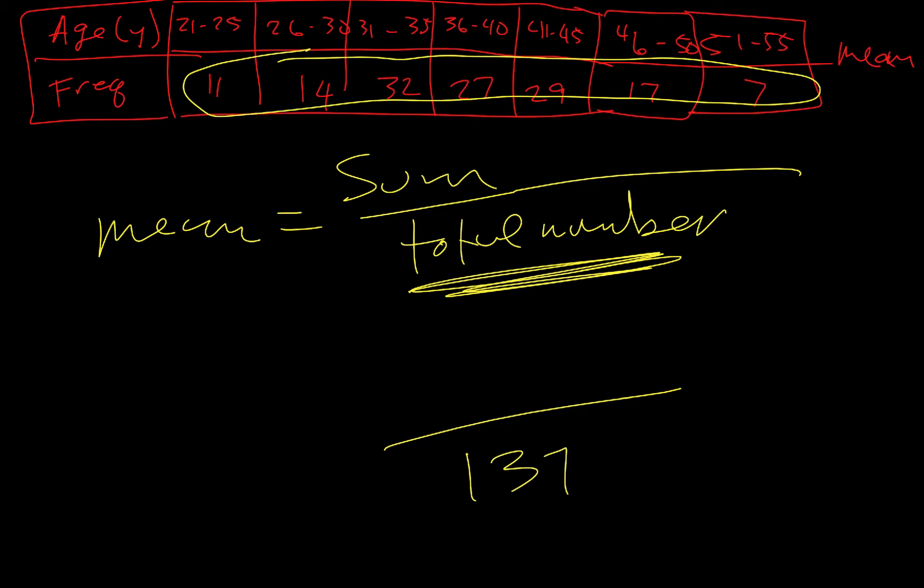Now for us to find how many we actually have within each of these, when it's grouped data like this we want to find the midpoint of each of these and use the midpoint. For example if we're going to do 21 to 25, we're going to do 21 plus 25 divided by 2. So that's going to be 46 divided by 2, which is 23. I'm going to replace this with 23, then add these together, divide by 2, and get 28.